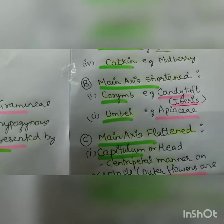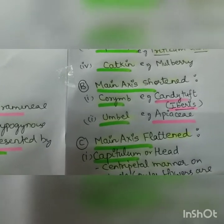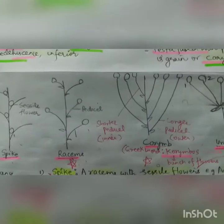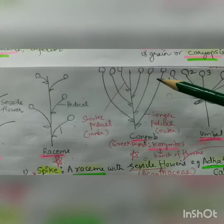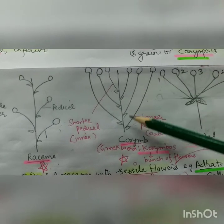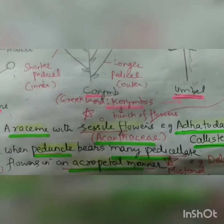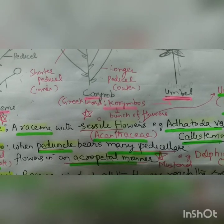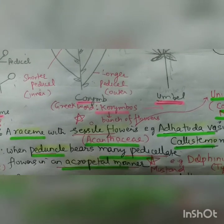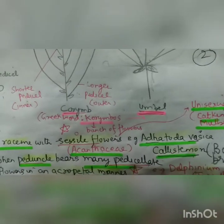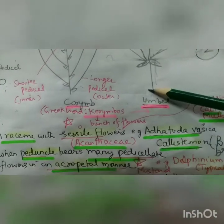The second type we are doing today is where the main axis is shortened - that is corymb and umbel. Here the main axis is not elongated; it is shortened. Corymb comes from the Greek word 'corymbus,' meaning bunch of flowers and fruits. It is prominent in the Brassicaceae family, and umbel is prominent in Apiaceae or Umbelliferae, in which the main axis is shortened.